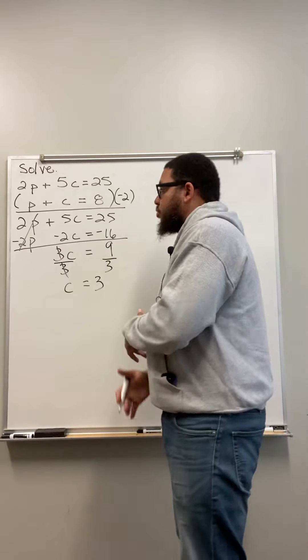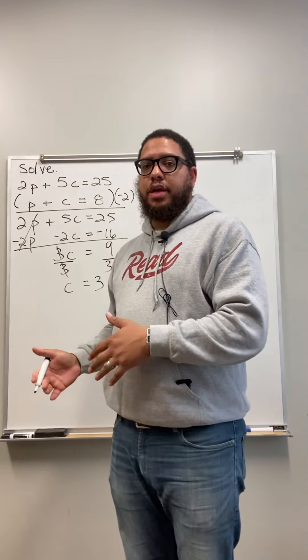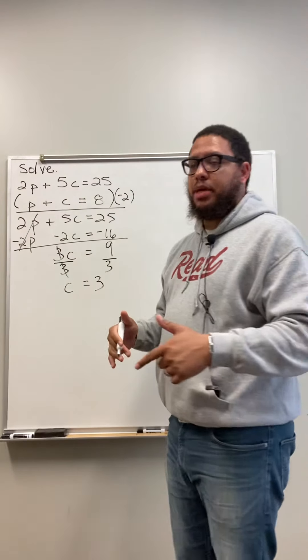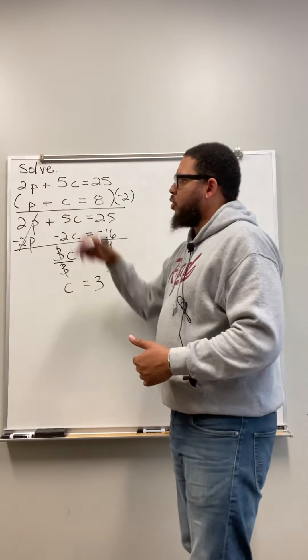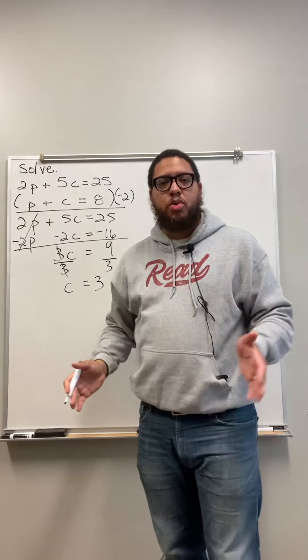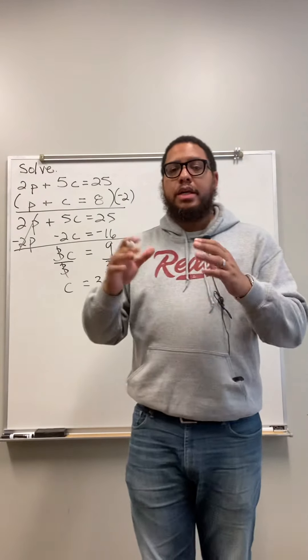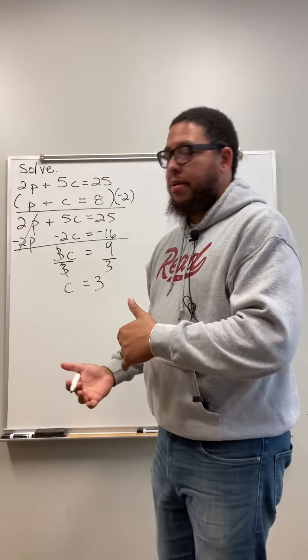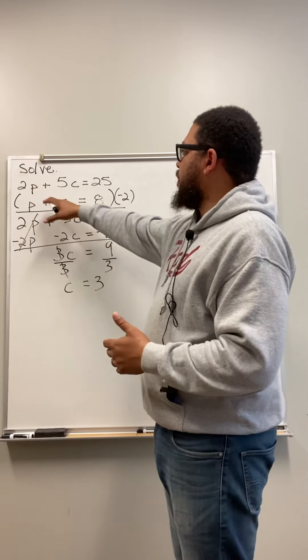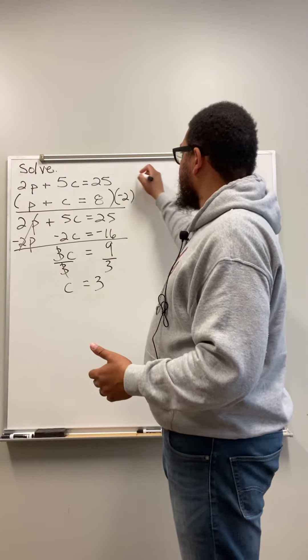So now I got to go back and figure out what P is. C is 3. Let's go back and figure out what P is. So I go up here. And now, how do I do that though? I got two equations. You can pick either equation. It doesn't matter which equation. Put that down in your notes. It doesn't matter which equation you choose to solve for the other variable. Now, P plus C equals 8 is a simpler equation. So I'm going to just use that. That's just what I typically do.